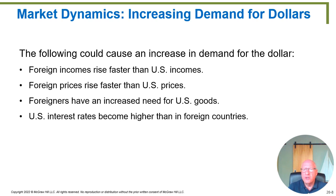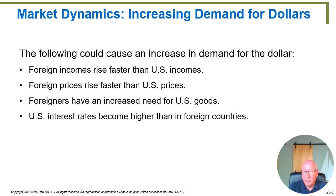Now let's think about some things that are going to increase the demand for dollars. If the demand for dollars increases, the US dollar becomes more valuable. Increasing demand for dollars comes from foreign incomes rising faster than US incomes. If foreign incomes rise faster, they are in a position to buy more goods from America. Using the example of Apple computers sold to Germans and BMWs sold to Americans — if Germany's income is rising faster, Americans aren't increasing their BMW purchases much, but Germans, since they're richer, are buying way more Apple computers. So the demand for dollars by the Germans would exceed the demand for euros by Americans.